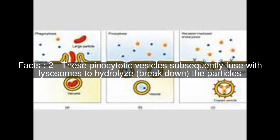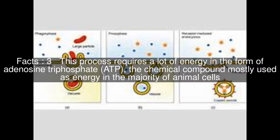These pinocytotic vesicles subsequently fuse with lysosomes to hydrolyze, or break down, the particles. This process requires a lot of energy in the form of adenosine triphosphate, ATP, the chemical compound mostly used as energy in the majority of animal cells.